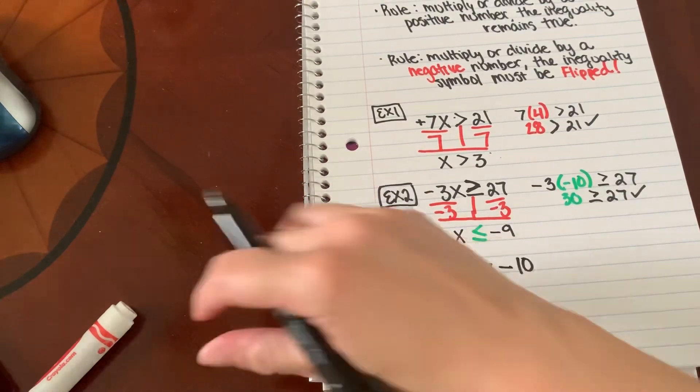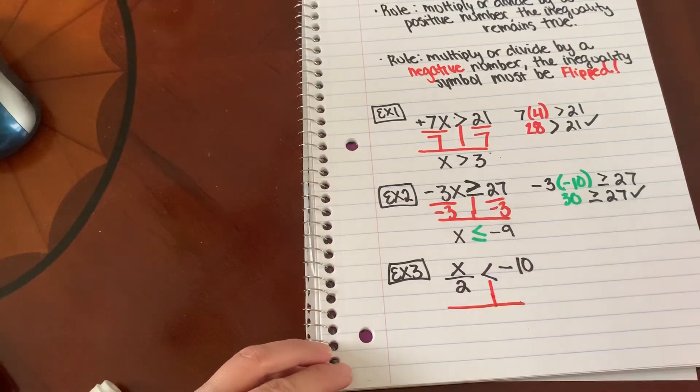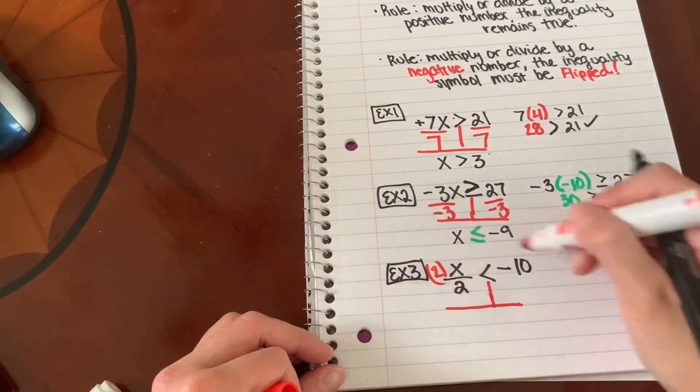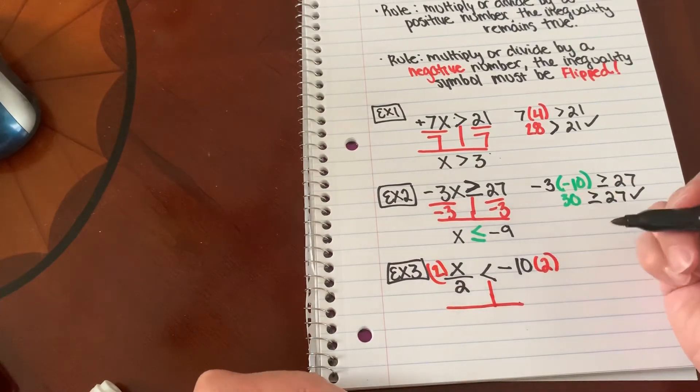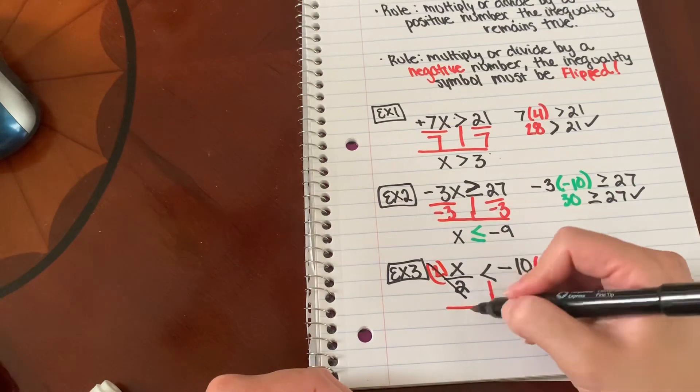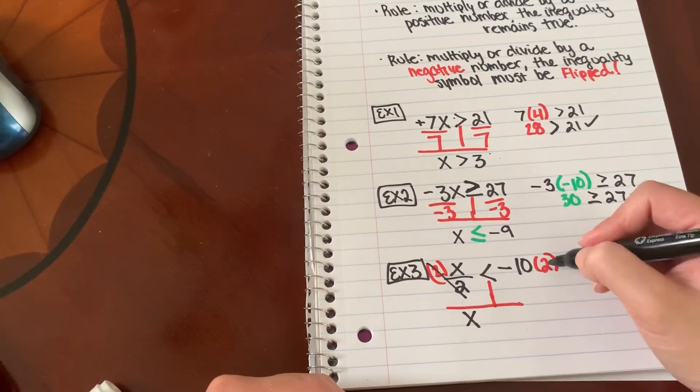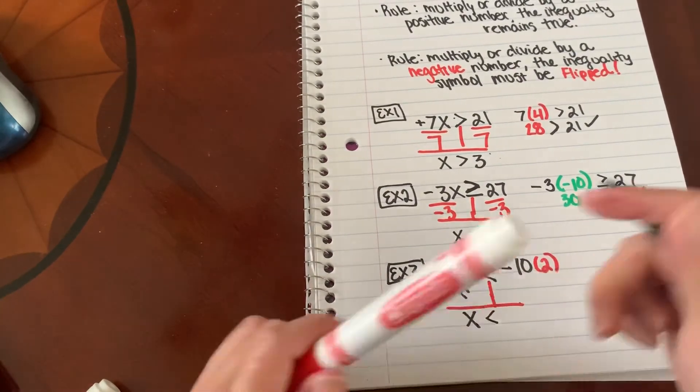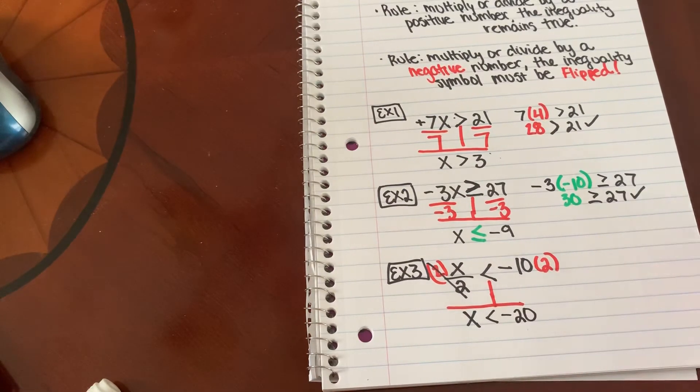Now what is the inverse of divide by 2? It's going to be multiplied by 2. Now just because you have a negative here does not mean you flip your inequality. Only if you are multiplying or dividing by a negative number. Since we are multiplying by a positive, my inequality stays the same. So here my answer is going to be x is less than negative 20.